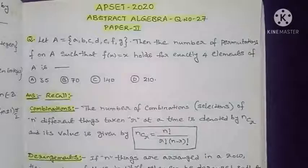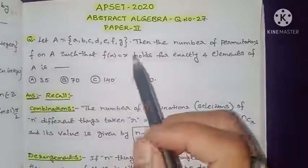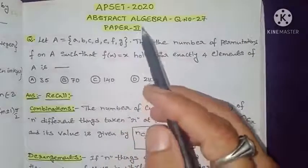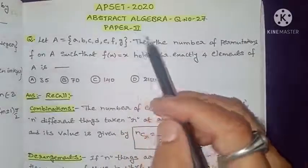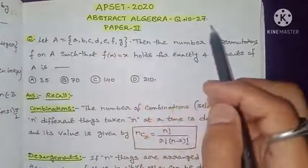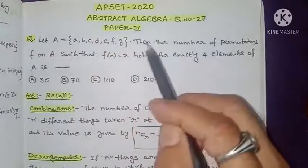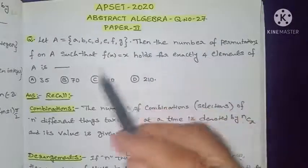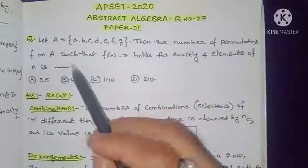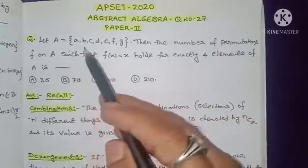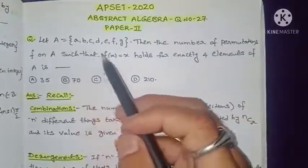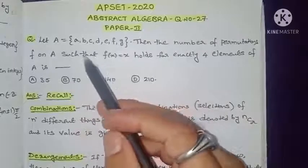Hi everyone, this is Ram Krishna, welcome to my channel. In this video I'm going to discuss the 2020 abstract algebra question number 27 from Paper 2.